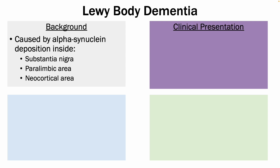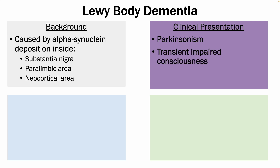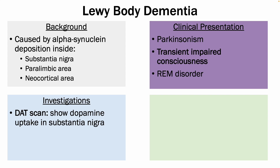In terms of the clinical presentation, you can get Parkinsonism, transient impaired consciousness — which is very different to all the other types of dementia — and you can get REM sleep disorder, where the patient physically acts out very unpleasant dreams vividly, often with arm and leg movements, also called dream enacting behavior. In terms of investigations, you can perform a DAT scan, which would show you dopamine uptake in the substantia nigra, as well as histology, which would show you alpha-synuclein deposition in the brain.